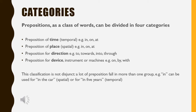Let's move on to the next slide: categories of prepositions. Prepositions as a class of words can be divided into four categories. First, preposition of time (temporal) — examples: in, on, at. Second, preposition of place (spatial) — examples: in, on, at.